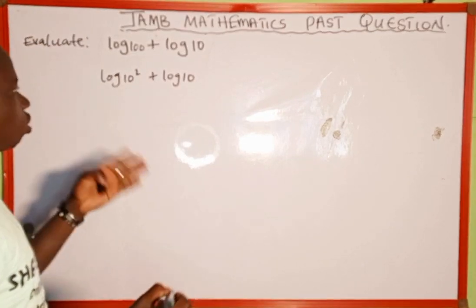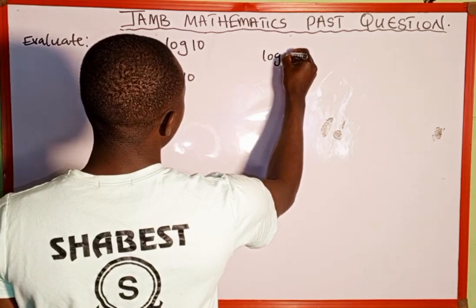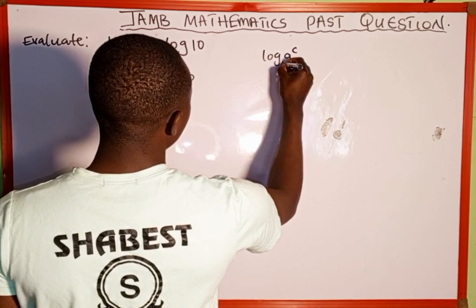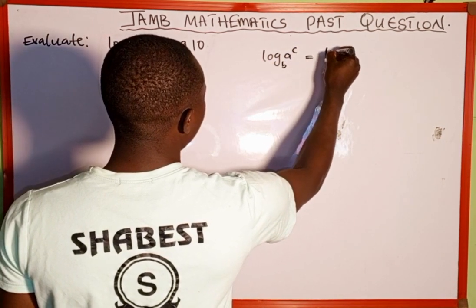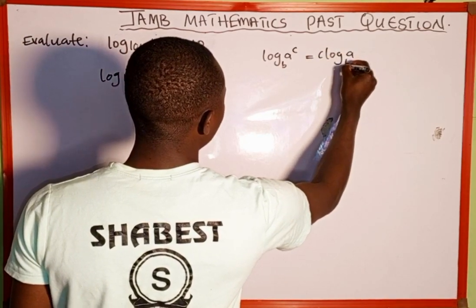We are going to recall the logarithm rule. When we have log of a raised to the power of c to the base of b, this is the same as c log a to the base of b.